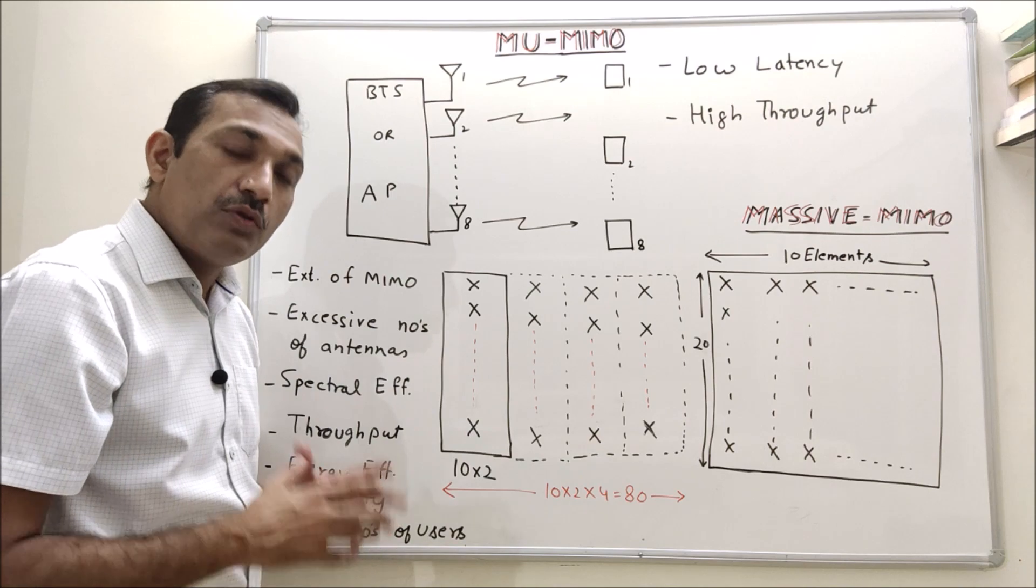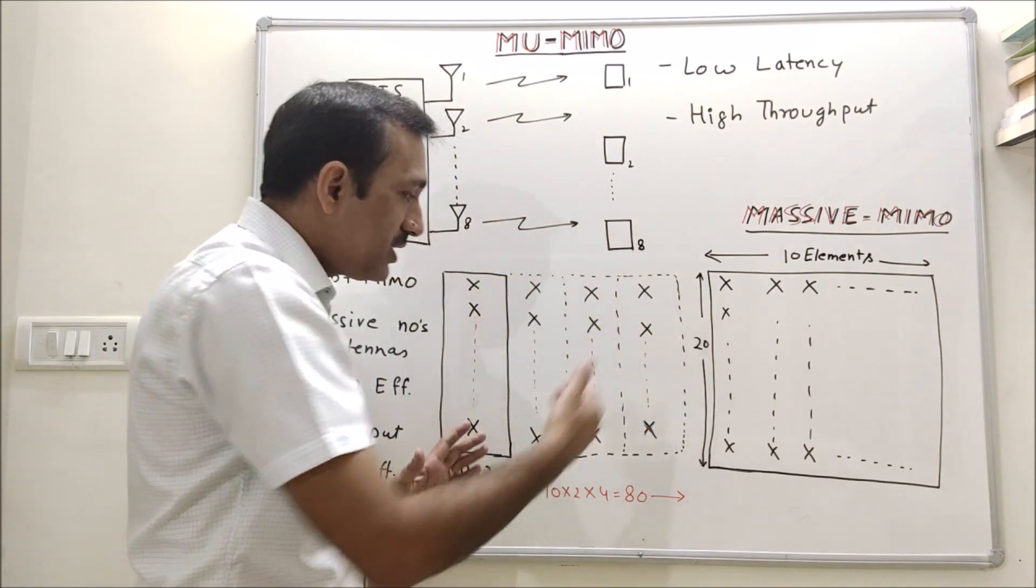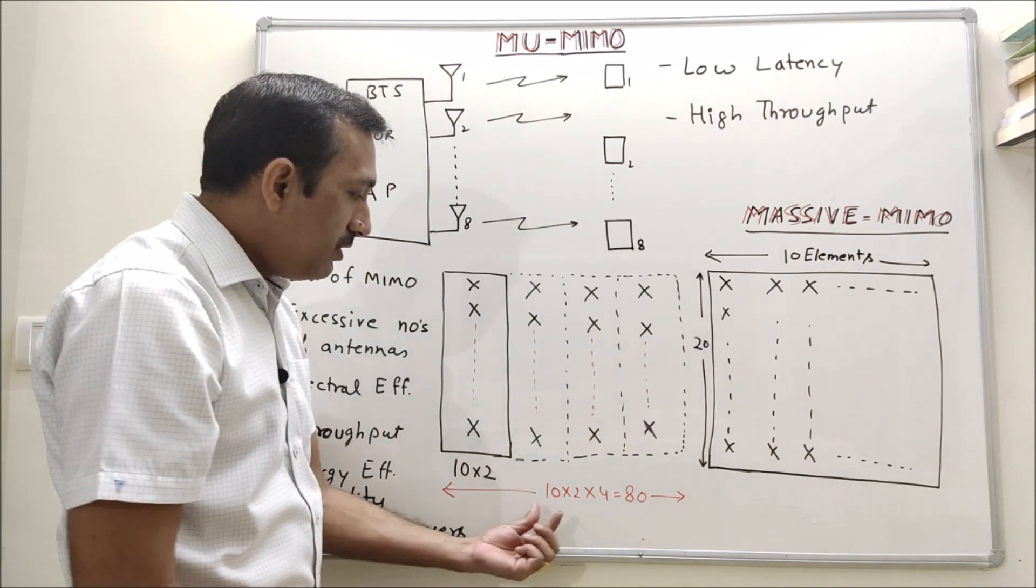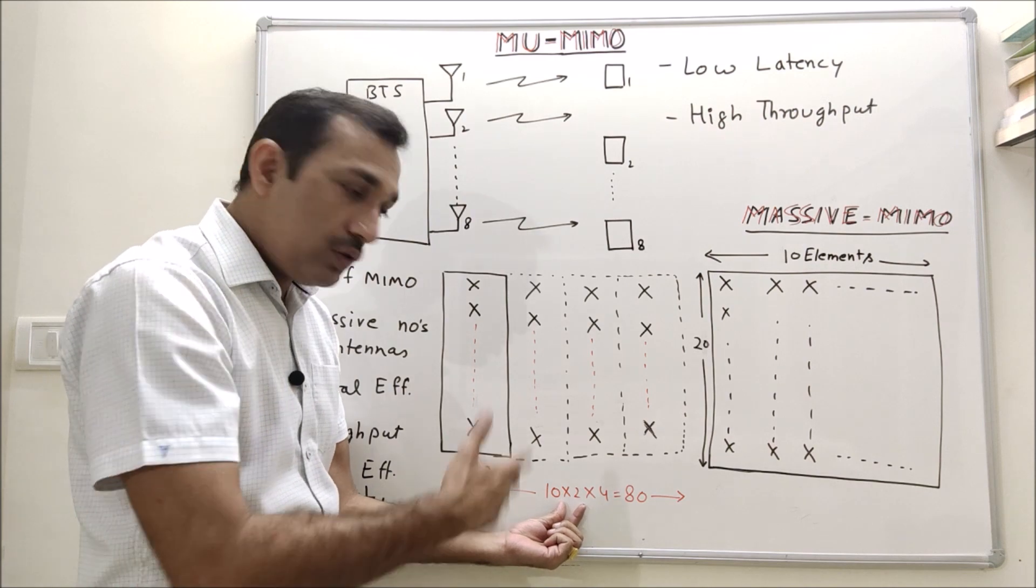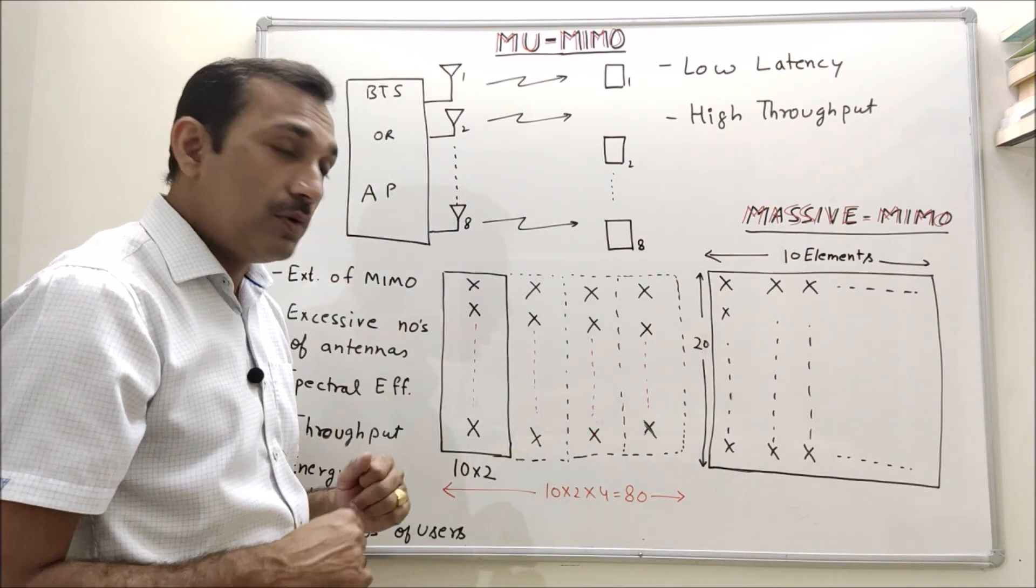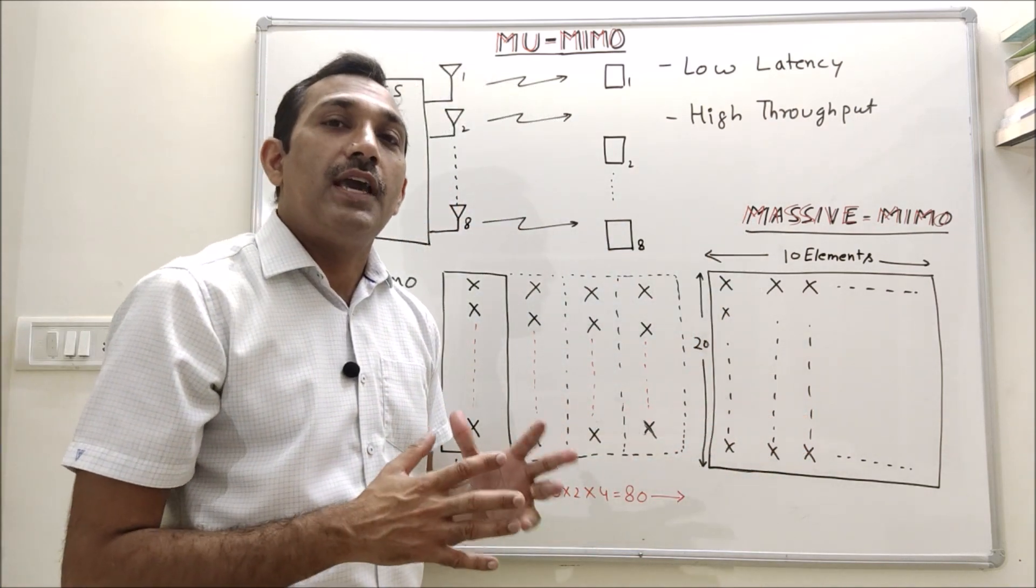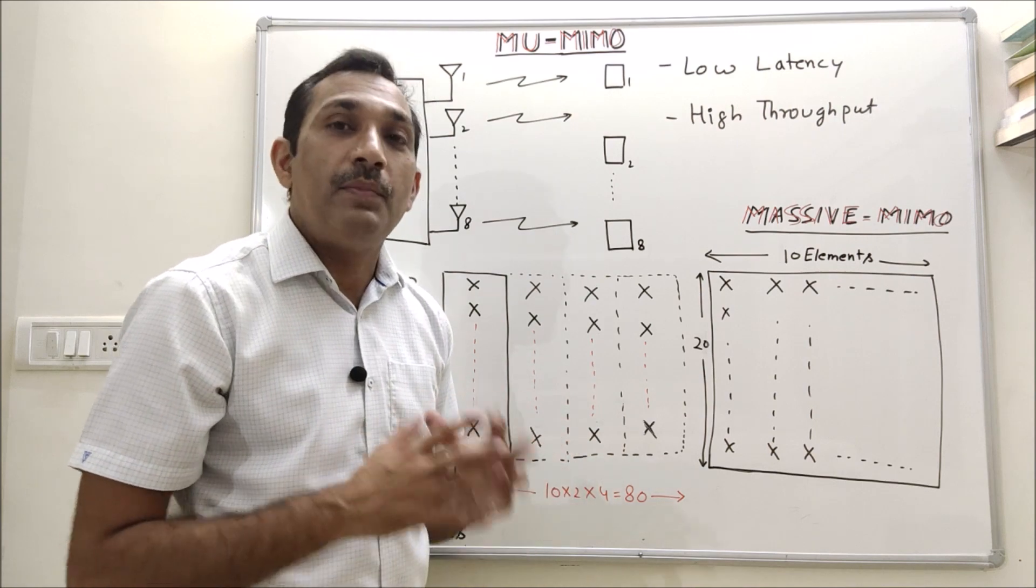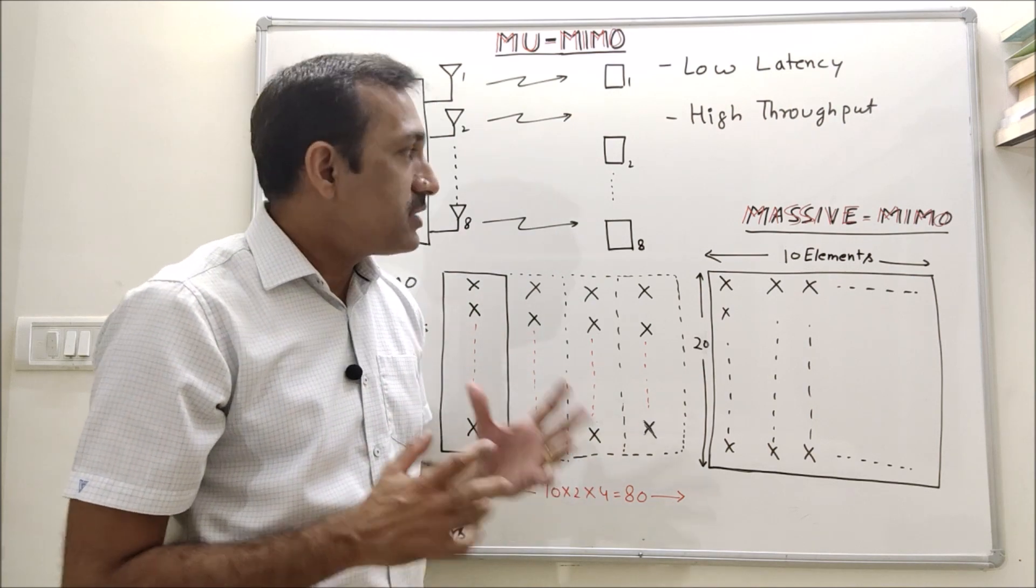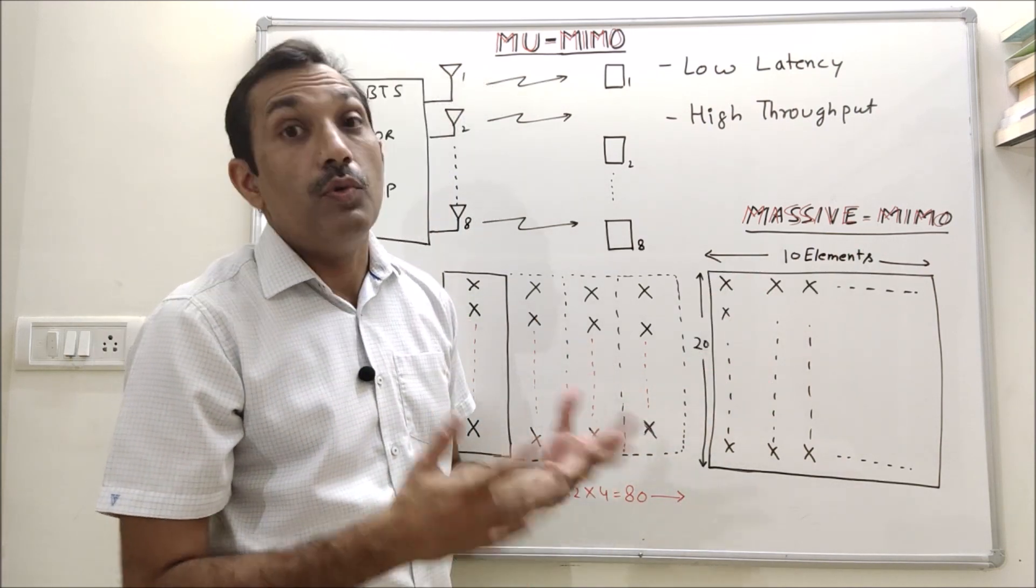If I am talking about MIMO, in that case I will be repeating these columns. Say if I am repeating it four times then I have 10 into 2 into 4, that means effectively 80 radiators - that is MIMO. But when I talk about massive MIMO, I am not talking about smaller numbers, I am talking about huge number of radiators or antennas. For example, 10 elements by 20 elements, that means total 200 antennas or more.